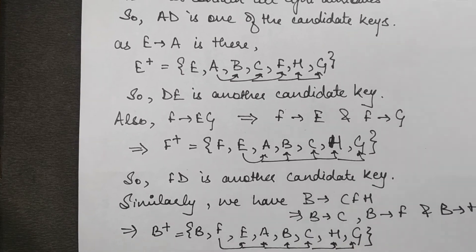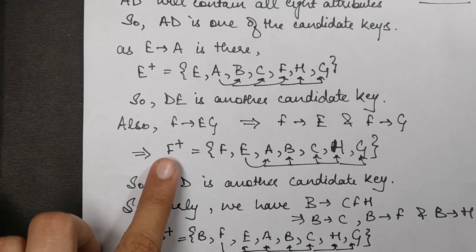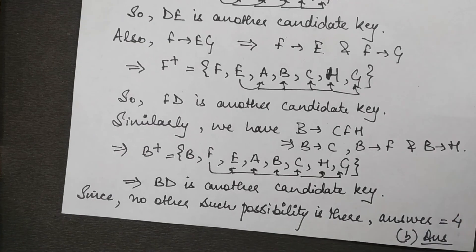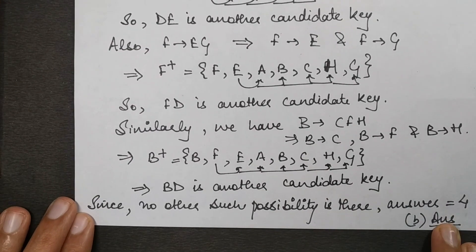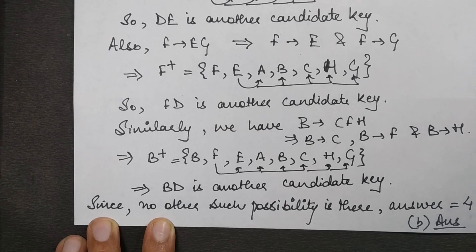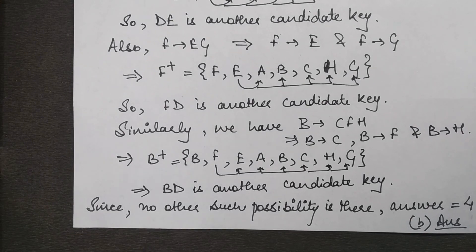In total we have four candidate keys: AD, ED, FD, and BD. So the answer is option B — four candidate keys. The next linked question on finding the highest normal form will be discussed in the next video. Stay tuned and happy learning!